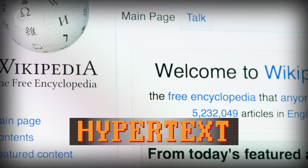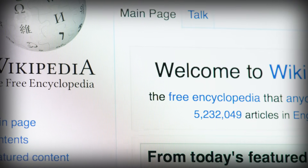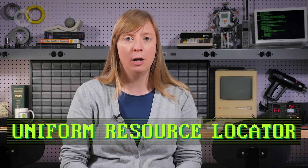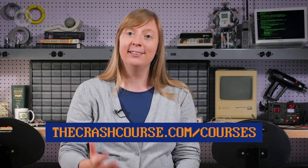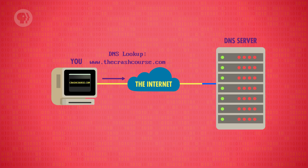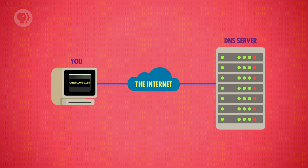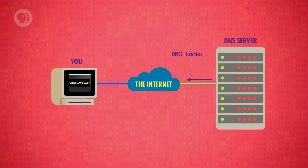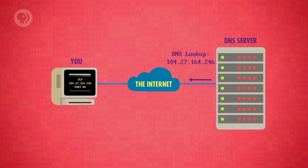Web pages are the most common type of hypertext document today. They're retrieved and rendered by web browsers. In order for pages to link to one another, each hypertext page needs a unique address. On the web, this is specified by a Uniform Resource Locator, or URL for short. An example web page URL is thecrashcourse.com/courses. When you request a site, the first thing your computer does is a DNS lookup. This takes a domain name as input, like thecrashcourse.com, and replies back with the matching computer's IP address.